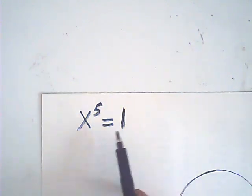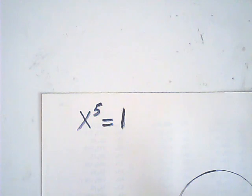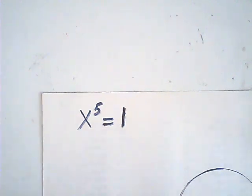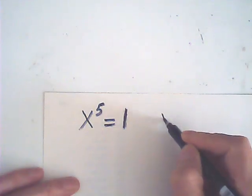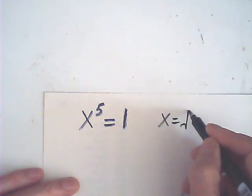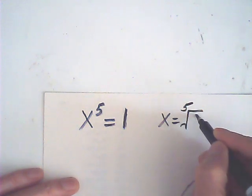We know that x, if it's a complex number, you have five roots, and x is equal to a fifth root of one.